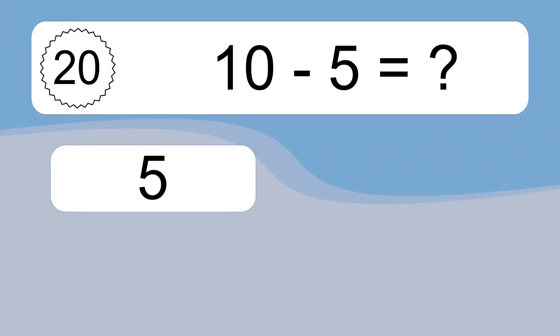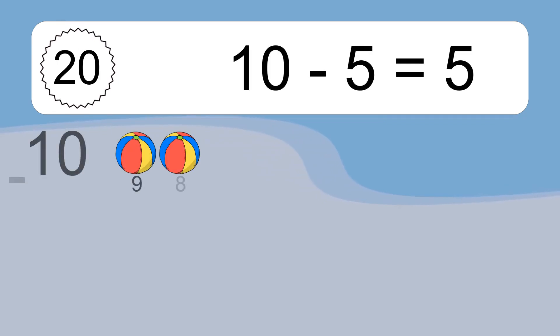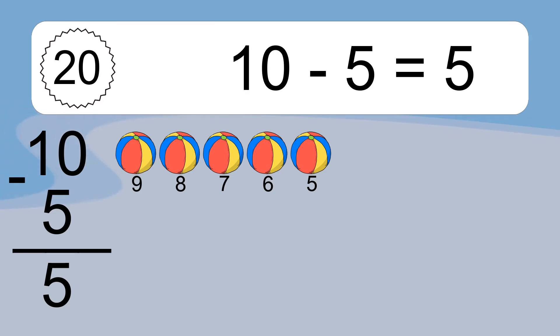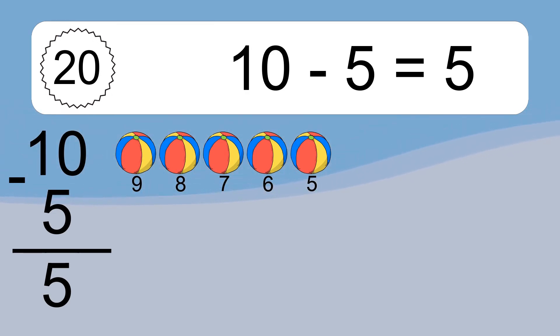10 minus 5 equals what? 10 minus 5 equals 5. Let's count it: 9, 8, 7, 6, 5.